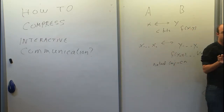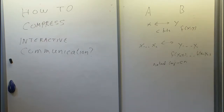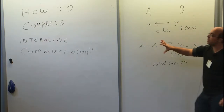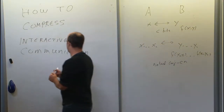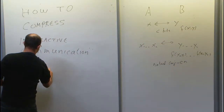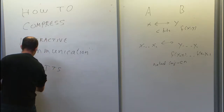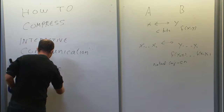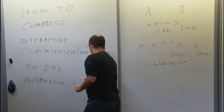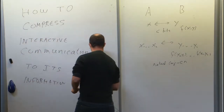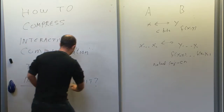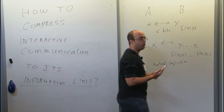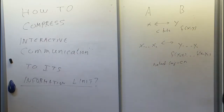I will not be discussing the direct sum question further. I just want to focus on the specific question of how to compress interactive communication to its information limit.